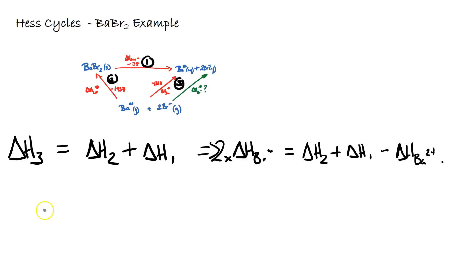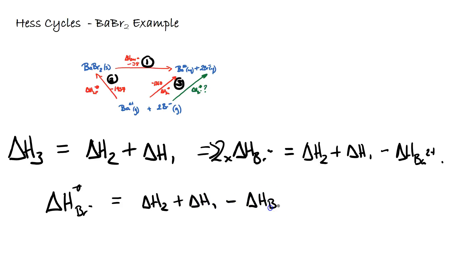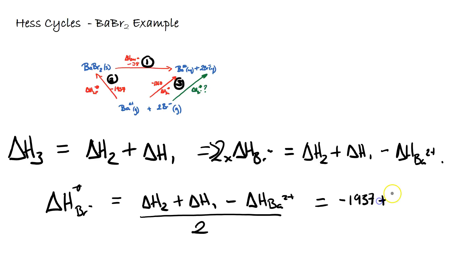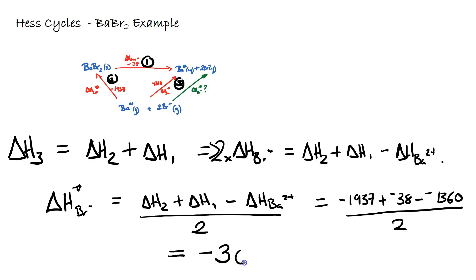So ΔH(Br⁻ hydration) = (ΔH₂ + ΔH₁ − ΔH(Ba²⁺)) / 2. Putting in values: (−1937 + −38 − (−1360)) / 2, giving a total of −307.5 kJ/mol. It's helpful that this is a negative number, as we are forming bonds between Br⁻ and the water molecules.